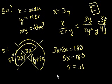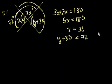So we know that y plus 30 has to equal this angle. Equals 72. Subtract 30 from both sides. You get y is equal to 42 degrees, which is choice E.